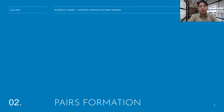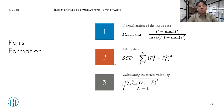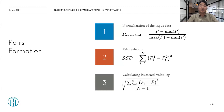Now we'll deeply dive into the two main parts of the distance approach. First is pairs formation and the second is generating trading signals. The pairs formation part is comprised of three different parts: first is normalization of the input data, second is the pairs selection, and the third is calculating the historical volatility. The first and third steps are pretty straightforward compared to the second step, so I'll briefly introduce them in this slide.